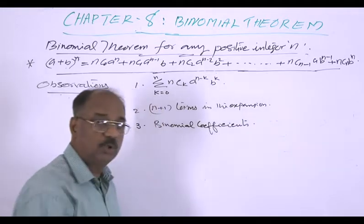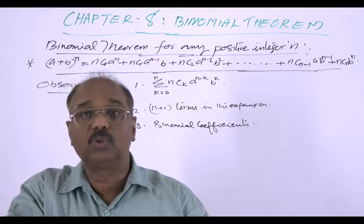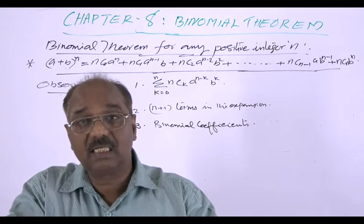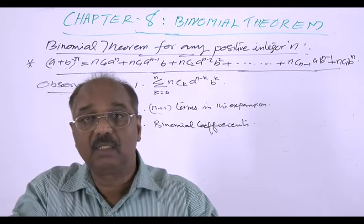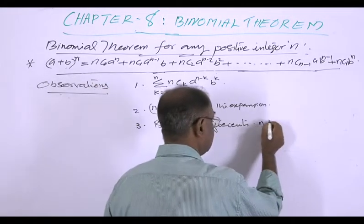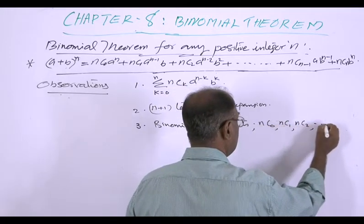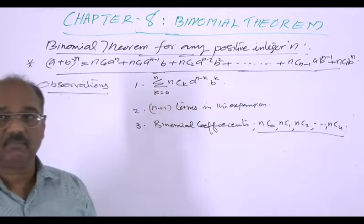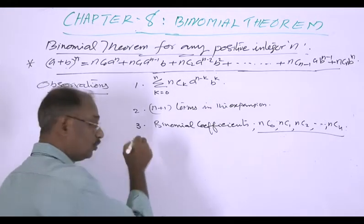The binomial coefficients: since there are n + 1 terms, we have n + 1 binomial coefficients. These coefficients are nC0, nC1, nC2, and so on up to nCn.